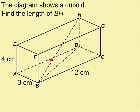I'm being asked to find the length of BH in this cuboid. In order to find this, I need to use this right angle triangle here. Because this is a right angle triangle, I'll be able to use Pythagoras to find this length here.